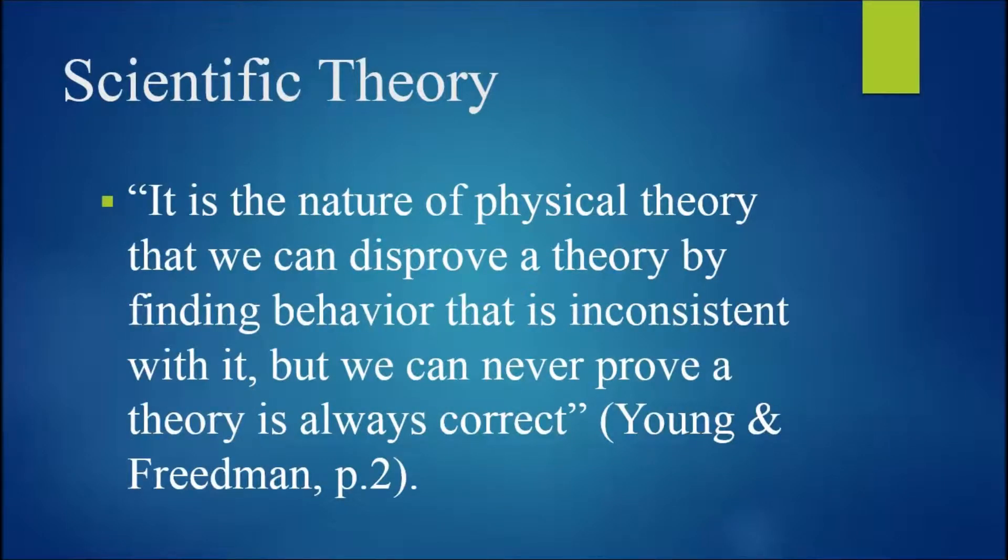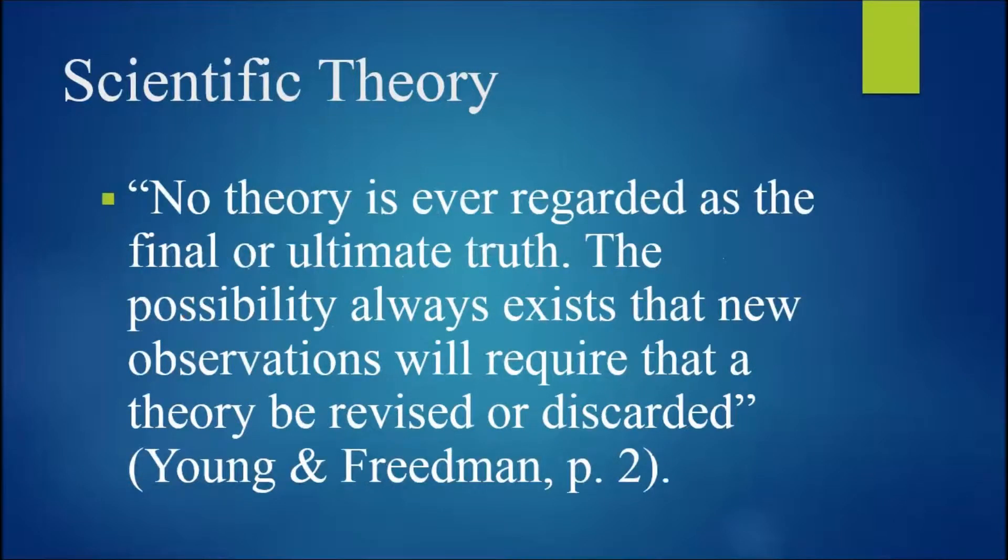It is the nature of physical theory that we can disprove a theory by finding behavior that is inconsistent with it, but we cannot prove a theory is always correct. So, no theory is ever regarded as the final or ultimate truth. The possibility always exists that new observations will require that a theory be revised or discarded.